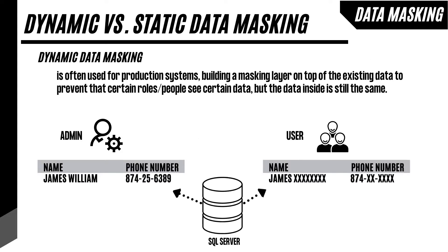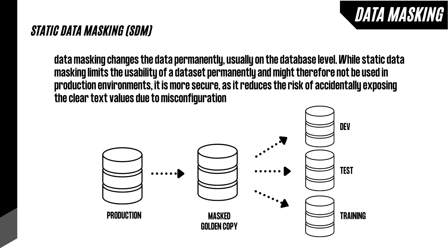When implementing masking as a protection method, there is a difference between dynamic and static data masking. Dynamic data masking is often used for production systems, building a masking layer on top of the existing data to prevent certain roles or people from seeing certain data, but the data inside is still the same. Static data masking changes the data permanently, usually at the database level. While static data masking limits the usability of a data set permanently and might therefore not be used in production environments, it is more secure as it reduces the risk of accidentally exposing clear text values due to misconfiguration.